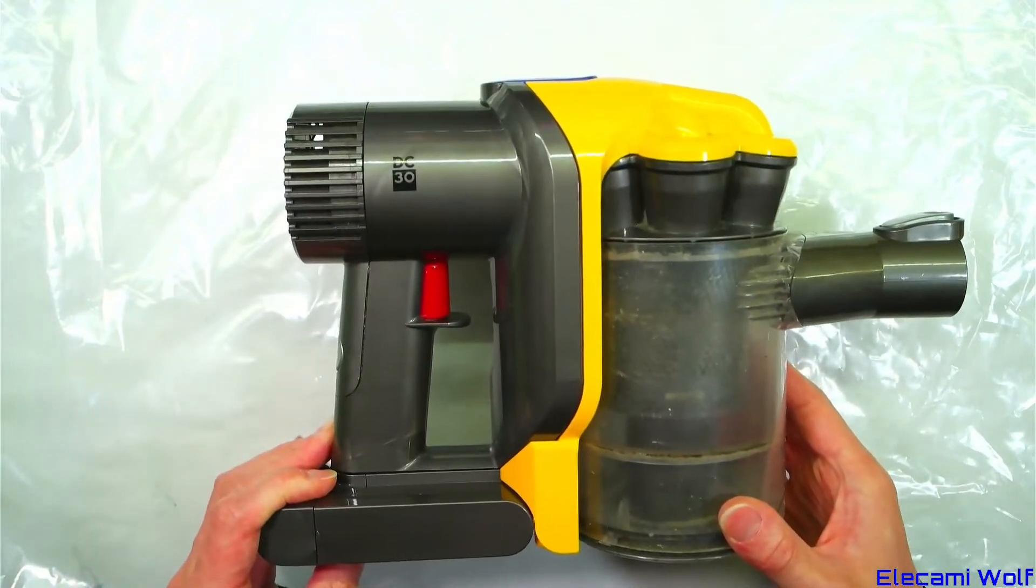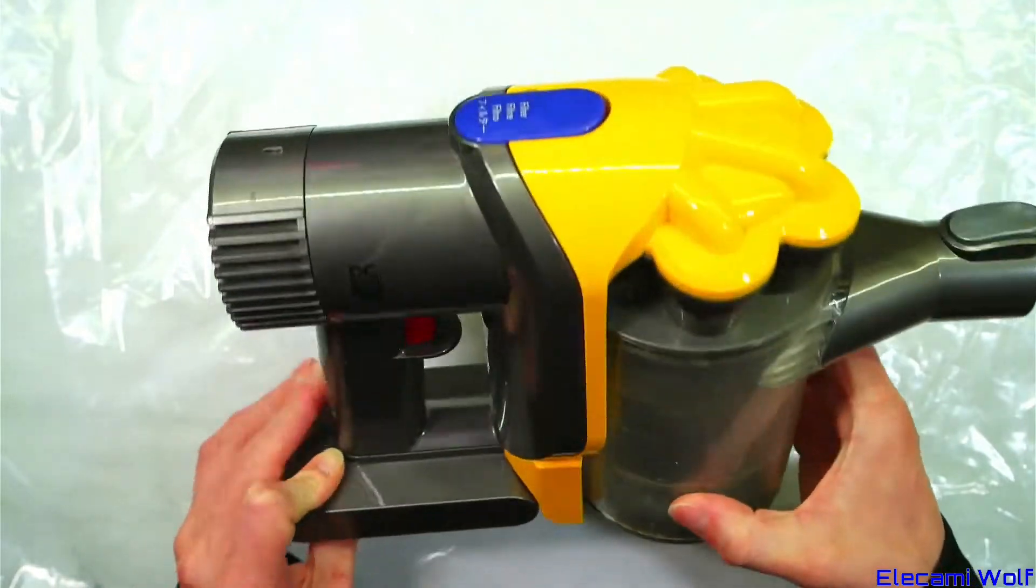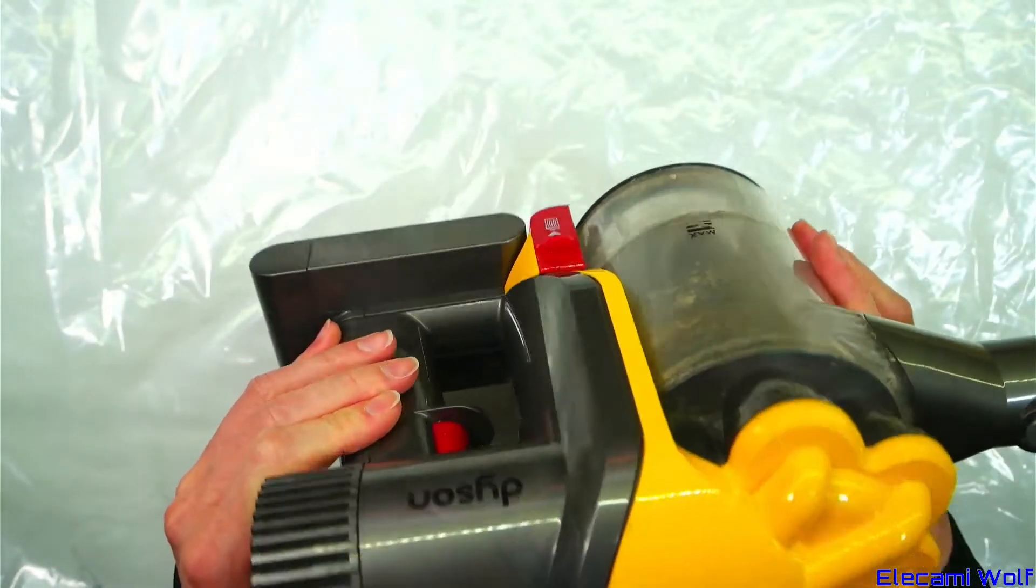I've got here a Dyson DC-30 vacuum cleaner which is very dirty. Let's take it apart and see how it can be cleaned.